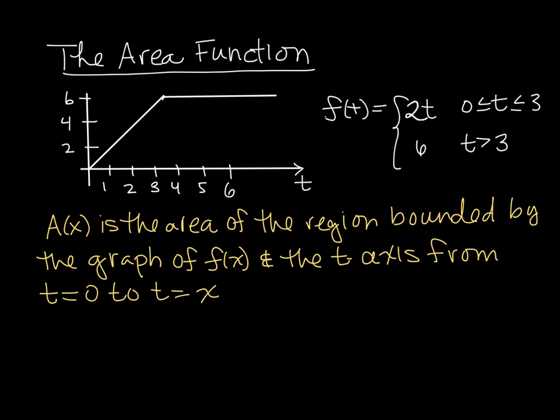For example, find A of 2. A of 2 is the area between our function f and t equals 2. So A of 2 is the area of this triangle right in here. A of 2 is equal to, we can just use the formula for the area of a triangle: 1 half, the base is 2, and the height of that triangle is 4.